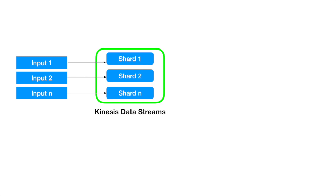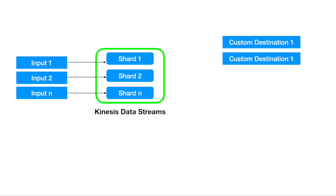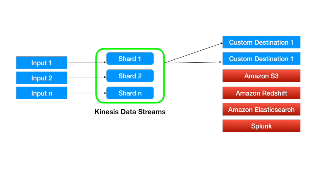After that, we design our consumers or destinations. We can write our own custom destination applications — for example, two custom consumer applications can receive the data. We can also store data to other destinations like Amazon S3, Amazon Redshift, Amazon Elasticsearch, and Splunk, by writing custom consumer applications to retrieve data from Kinesis Data Streams.